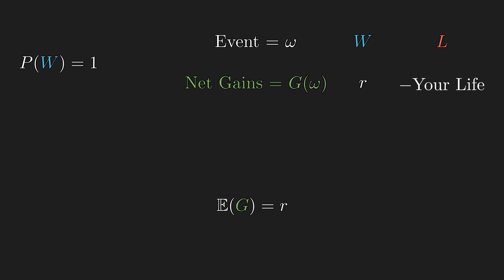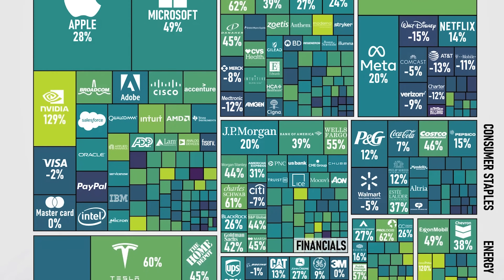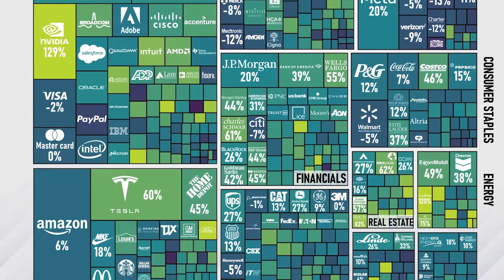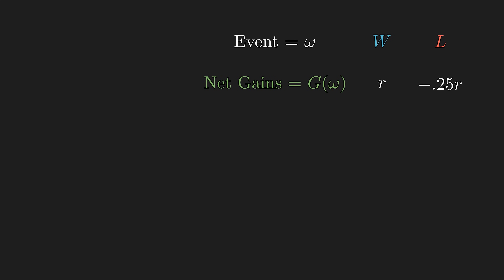We looked at two extreme examples: one where you have no edge and no long-term winning strategy, and another where you are guaranteed to win and should bet everything each time. The real interesting problem is when your expected payout is positive but you are not guaranteed to win. Let's look at one such example.